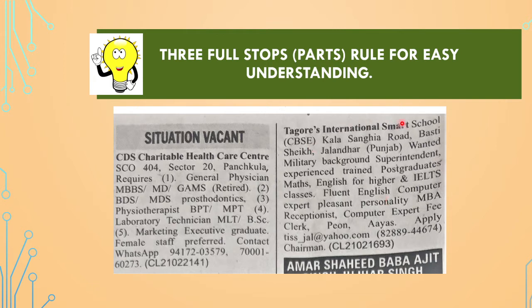Now Tegos International Smart School requires — it is a CBSE school on Kala Sangiya Road. Wanted: military background superintendent. Whatever is required, after writing that, the first full stop comes. Then, what qualities are needed — fluent English, computer expert, pleasant personality, whatever needs to be shown. After that comes the second full stop. And then the contact details come — that is the third full stop. So these three things, if we think and write dividing this way, our marks in the advertisement will not go anywhere.